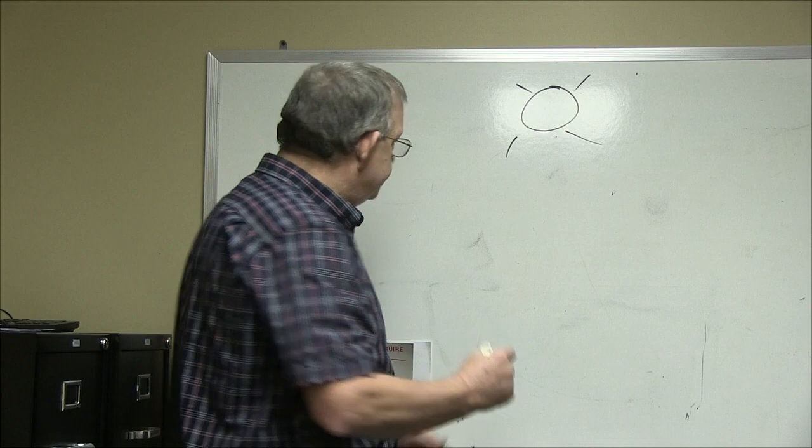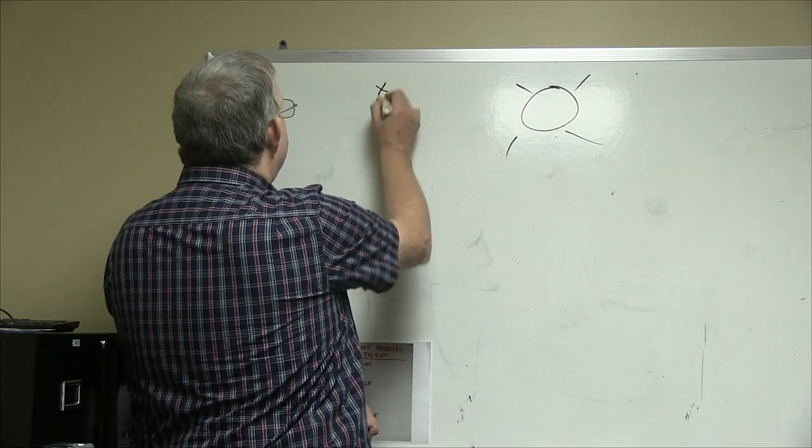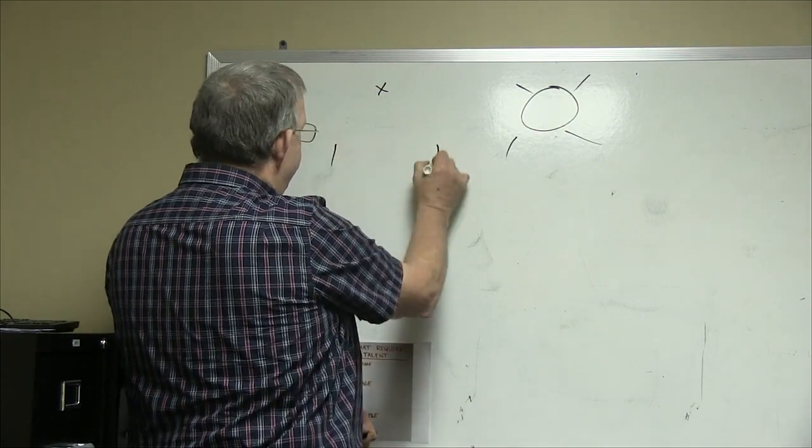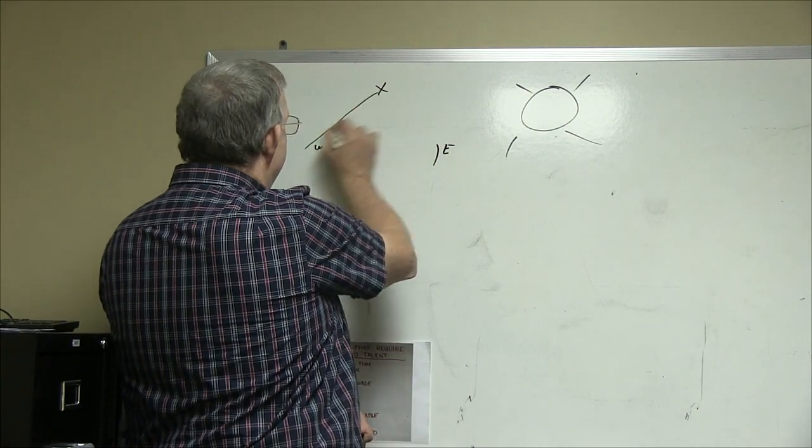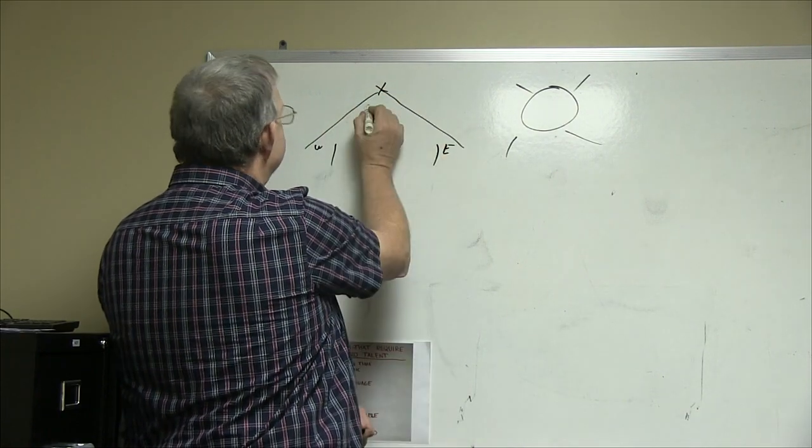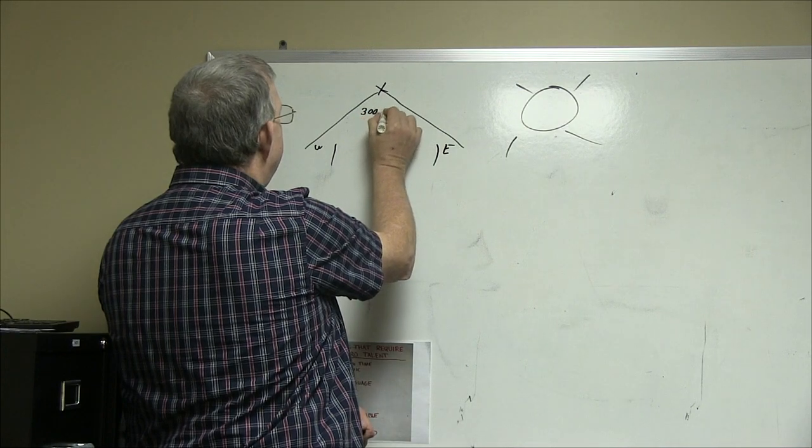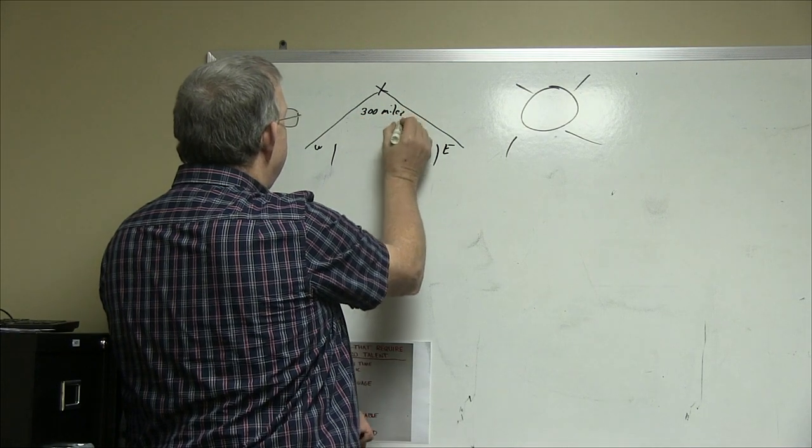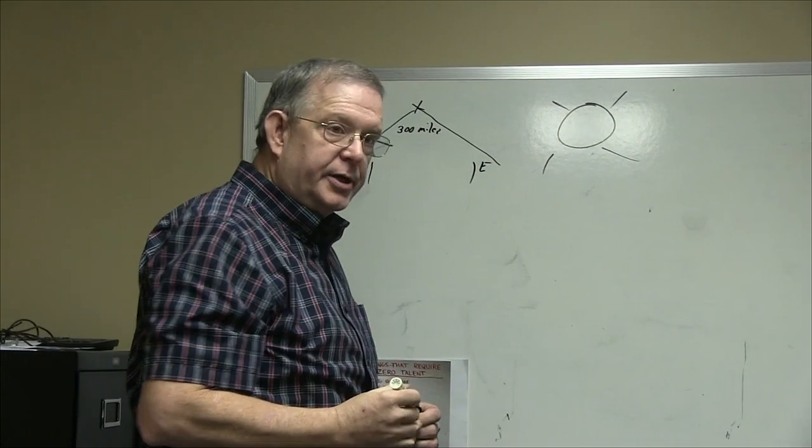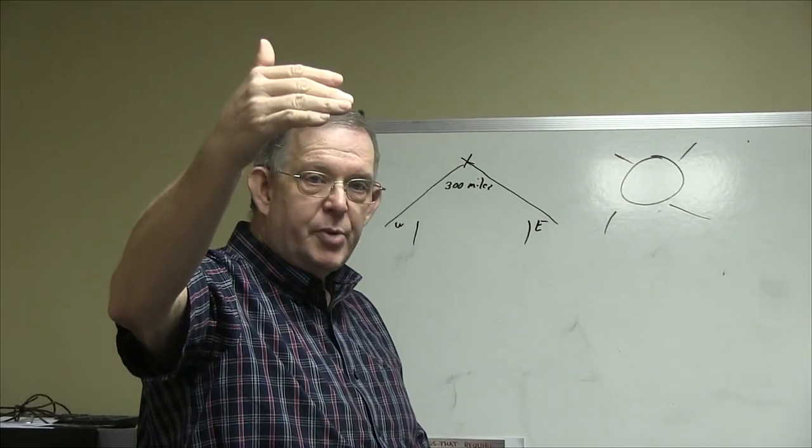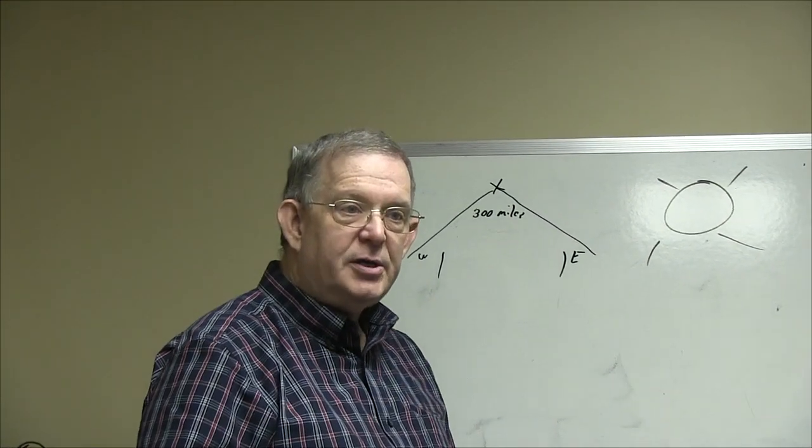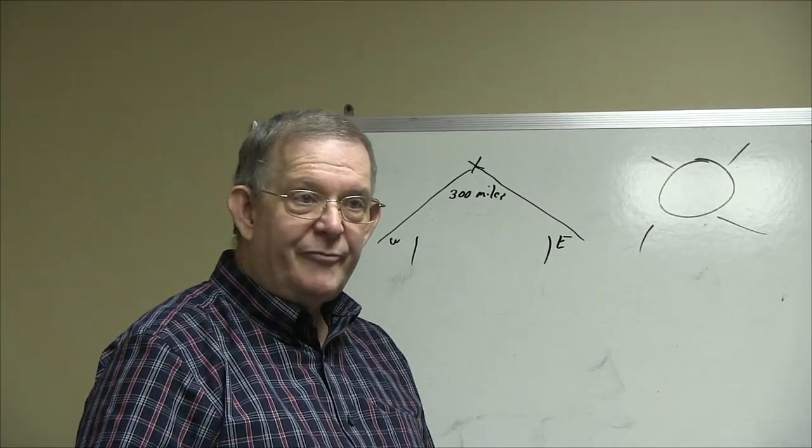At 300 miles, so you have your satellite here and you have the east coast and west coast. At 300 miles, it can actually go from coast to coast. It will also go up into the southern part of Canada and the northern part of Mexico.